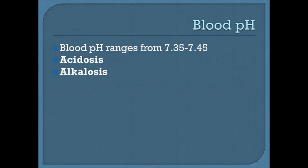Our blood pH has to stay between 7.35 and 7.45. Any changes below or above that can result in acidosis or alkalosis. Even 7.34 would cause significant health issues. It's extremely important for our bodies to maintain this blood pH.